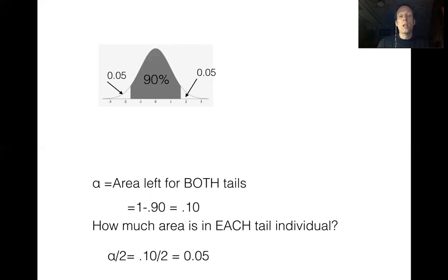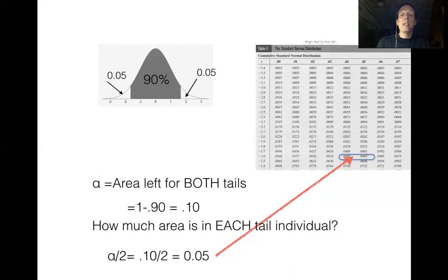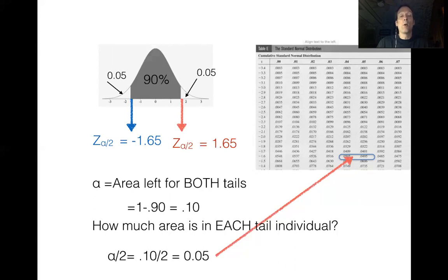Now we find the Z value corresponding to the lowest 5% of the curve. We pull out our Z table and look for the lowest 5% of area. Remember, if 5% falls exactly between two areas, always take the Z score furthest away from zero. The low side of the curve is negative 1.65. To get the high side, we just flip the sign, giving us positive 1.65.